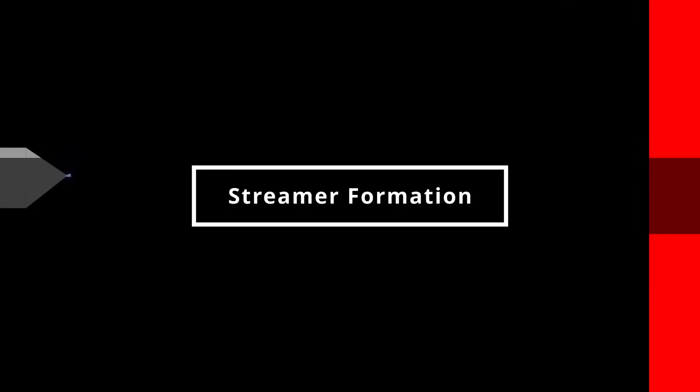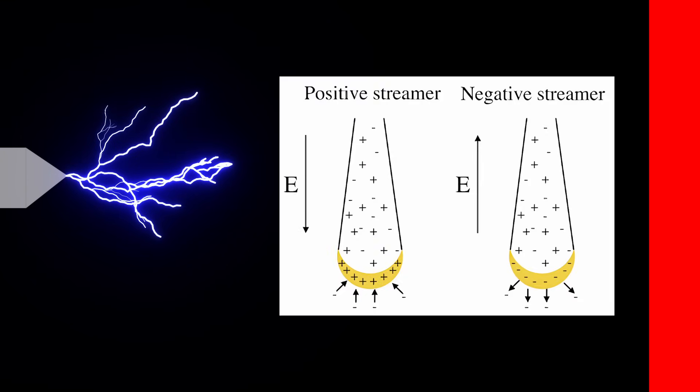As the electric field builds, small streamers develop which elongate ionized regions of about 10 meters in length. These are capable of locally enhancing the electric field at its extremities. This field enhancement is the main prerequisite for the formation of a hot self-propagating leader channel.